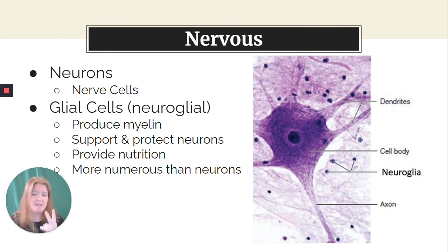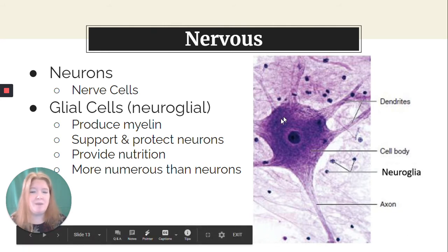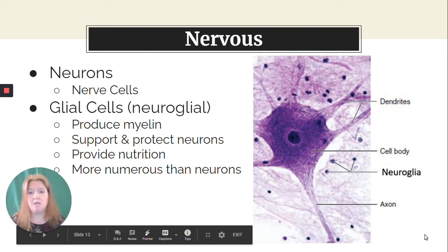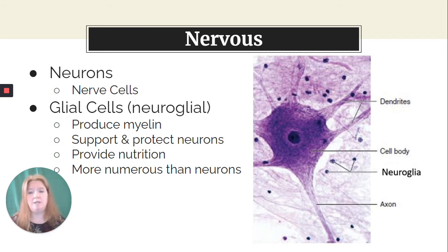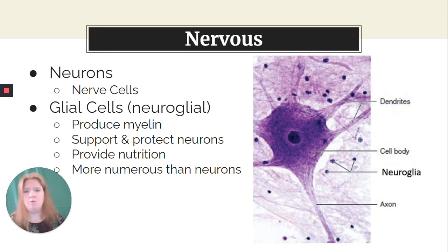Now let's move on to nervous tissue. Two main types of cells: neurons and glial cells. Neurons are nerve cells — the stars of the nervous system. They look like this with dendrites and a long axon connecting to another neuron, with the cell body containing the nucleus. Glial cells are supporters of those neurons — much more numerous — and they really help neurons do their job effectively. They produce myelin, support and protect neurons, participate in the immune response, and provide nutrition.